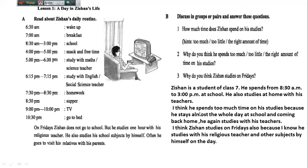Jisan is a student of class 7. He spends from 8:30 am to 3 pm at school — a very long time. He also studies at home with his teachers. I think he spends too much time on studies because he stays almost the whole day at school and coming back home, he again studies with his teachers. I think Jisan studies on Fridays because he studies with his religious teachers and other subjects by himself on that day.